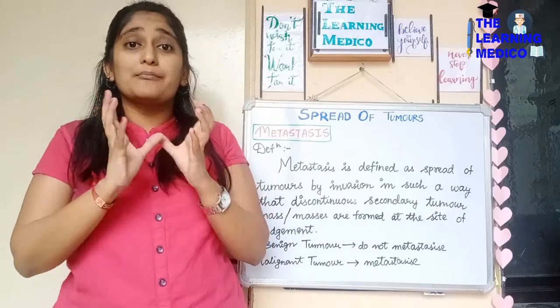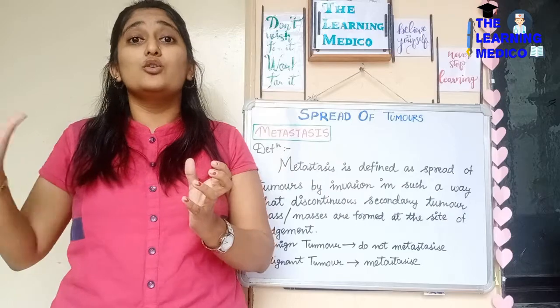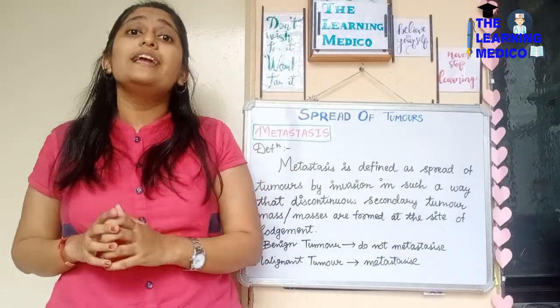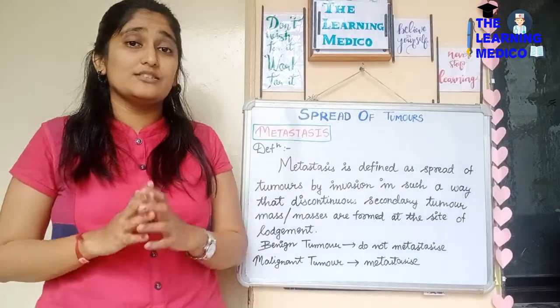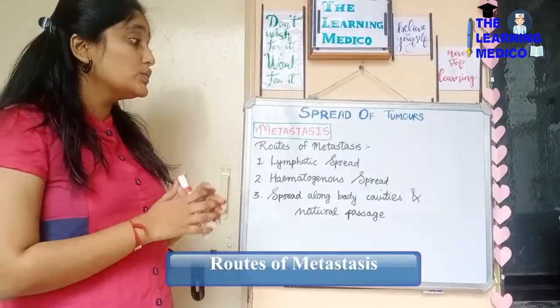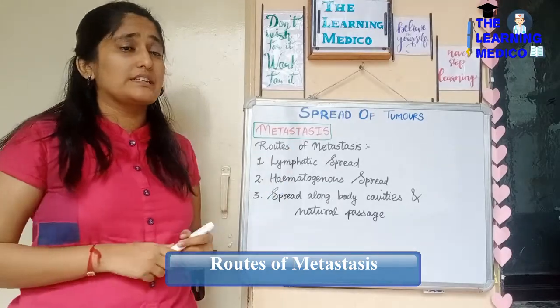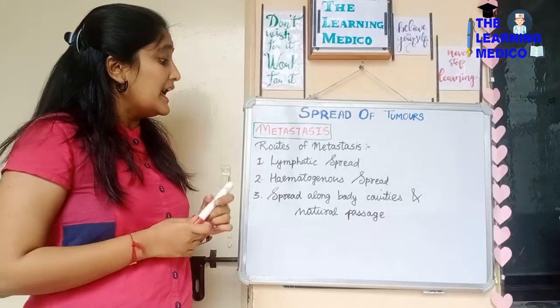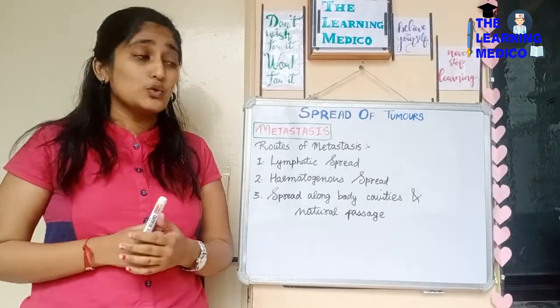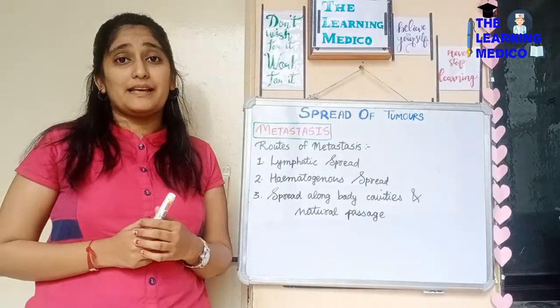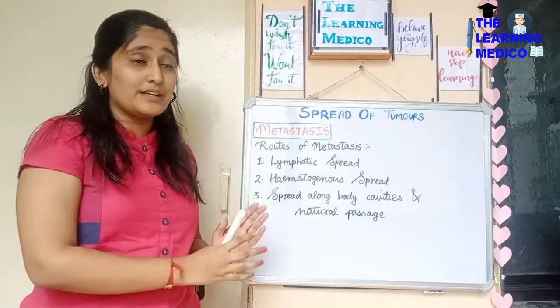Now we will see the types of metastasis, or the routes of metastasis. There are three main routes: first, lymphatic spread; second, hematogenous spread through blood; and third, spread along body cavities and natural passages.